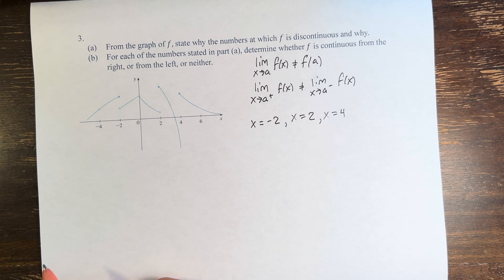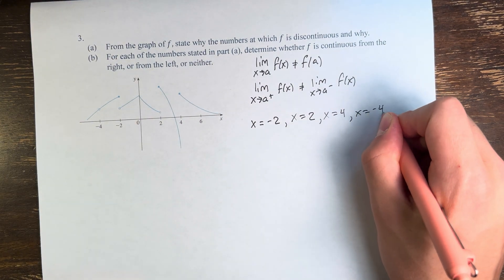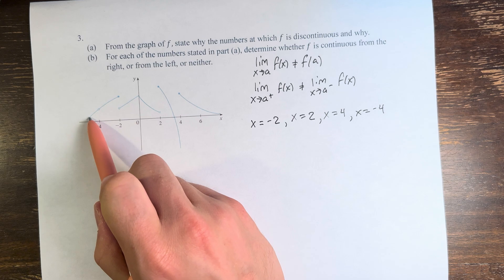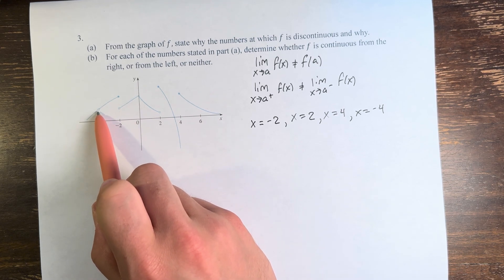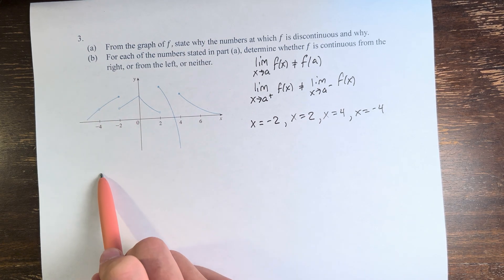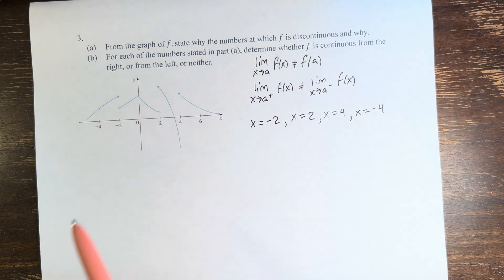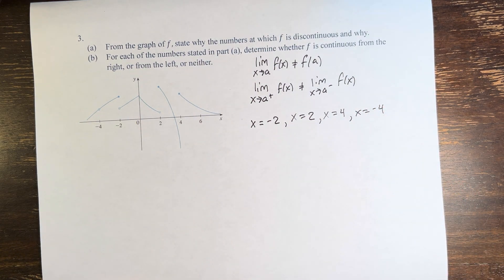We also have one more point where the limit does exist, but it's not equal to the value of the function at that point. That x value is x equals negative 4. From the left and the right, we're both approaching the same value. However, this is an open circle, which means the function does not actually equal this value at this point. In fact, there is no point shaded in at x equals negative 4, so f(a) itself doesn't exist. Therefore, this is another point where the function is discontinuous.